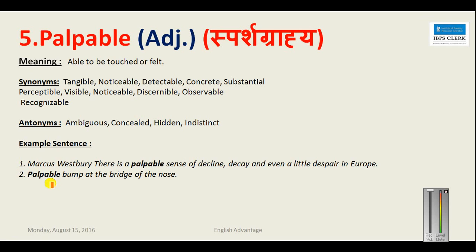The next word is 'palpable' — used for something that is tangible, detectable, or concrete: something you can see and touch. Substantial means the major part of something. Other synonyms include perceptible, visible, noticeable, discernible, observable, and recognizable. The antonyms for palpable are ambiguous, concealed, hidden, and indistinct.